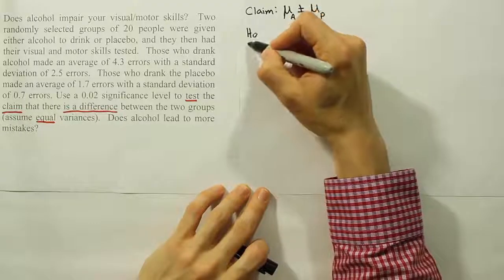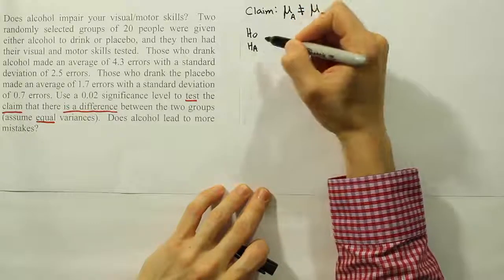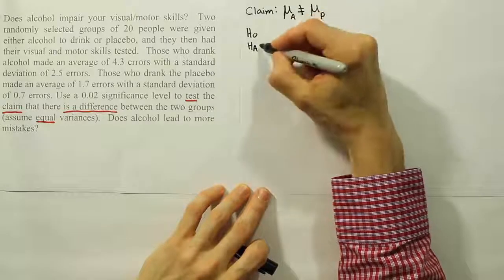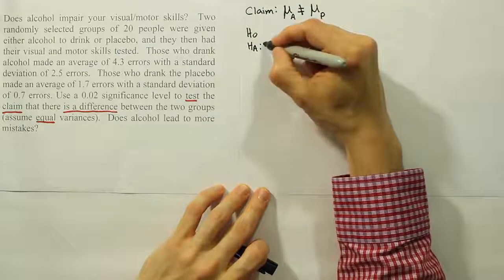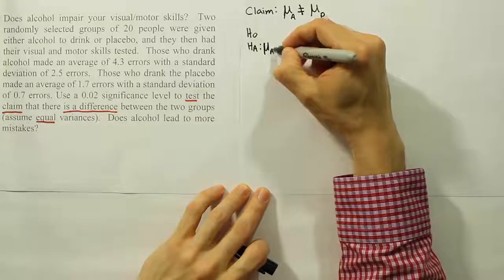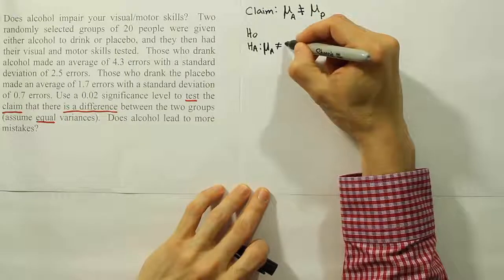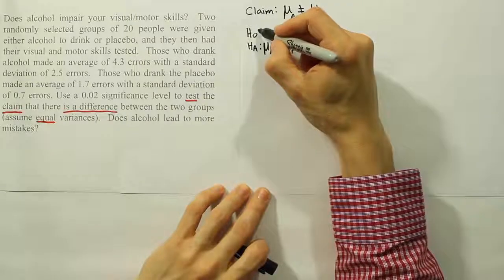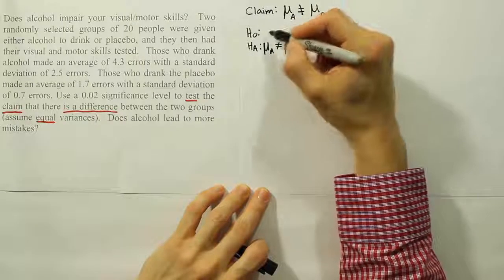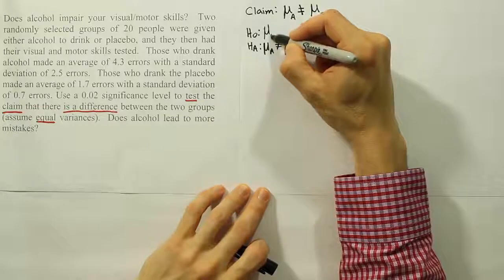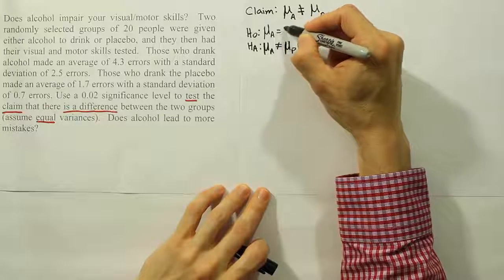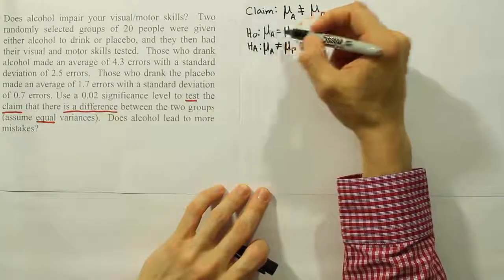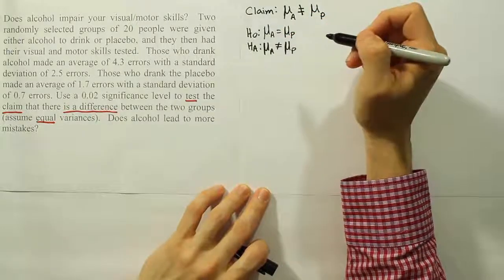Now let's express H₀ and H_A. The claim contains the not-equal-to sign, so the claim and H_A are the same: μ_a ≠ μ_p. For the null hypothesis we use equality: H₀ is μ_a = μ_p. So we have the claim, H₀, and H_A, and we're ready for the next step.